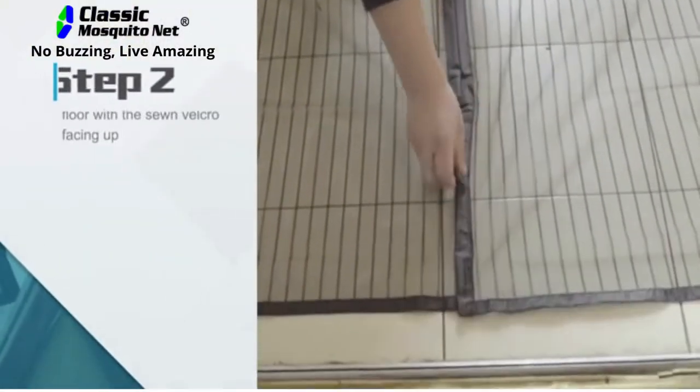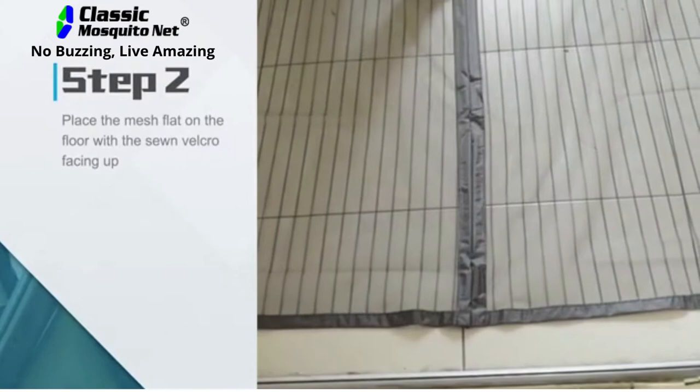Step 2: Place the mesh flat on the floor with the sewn Velcro facing up.